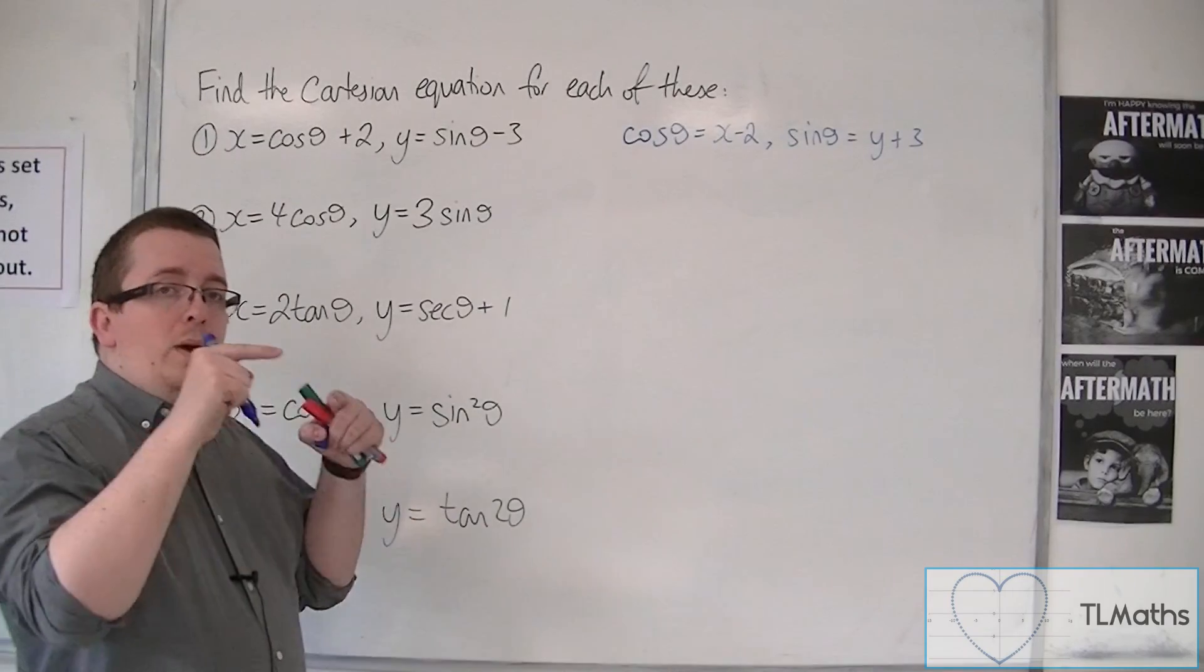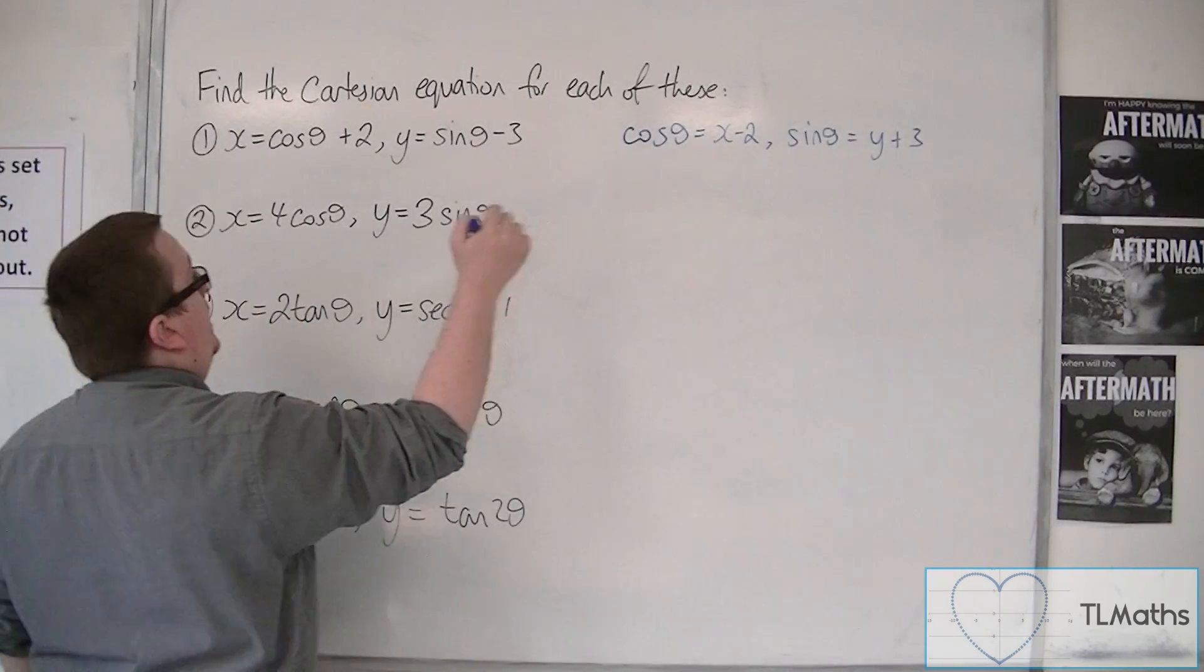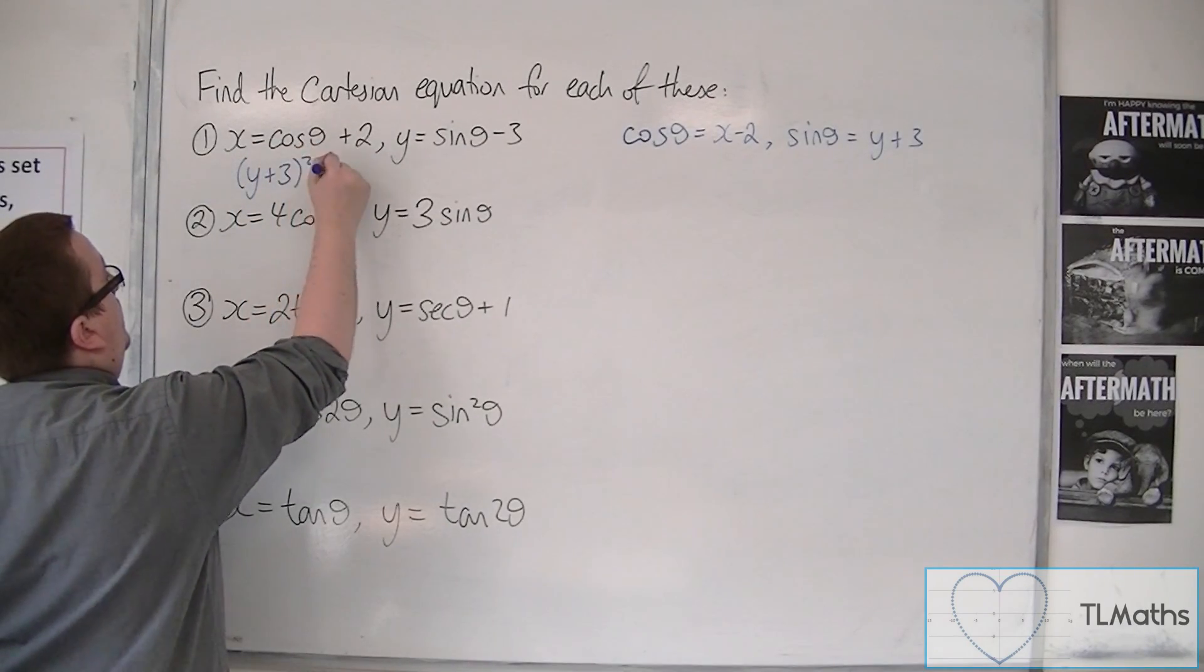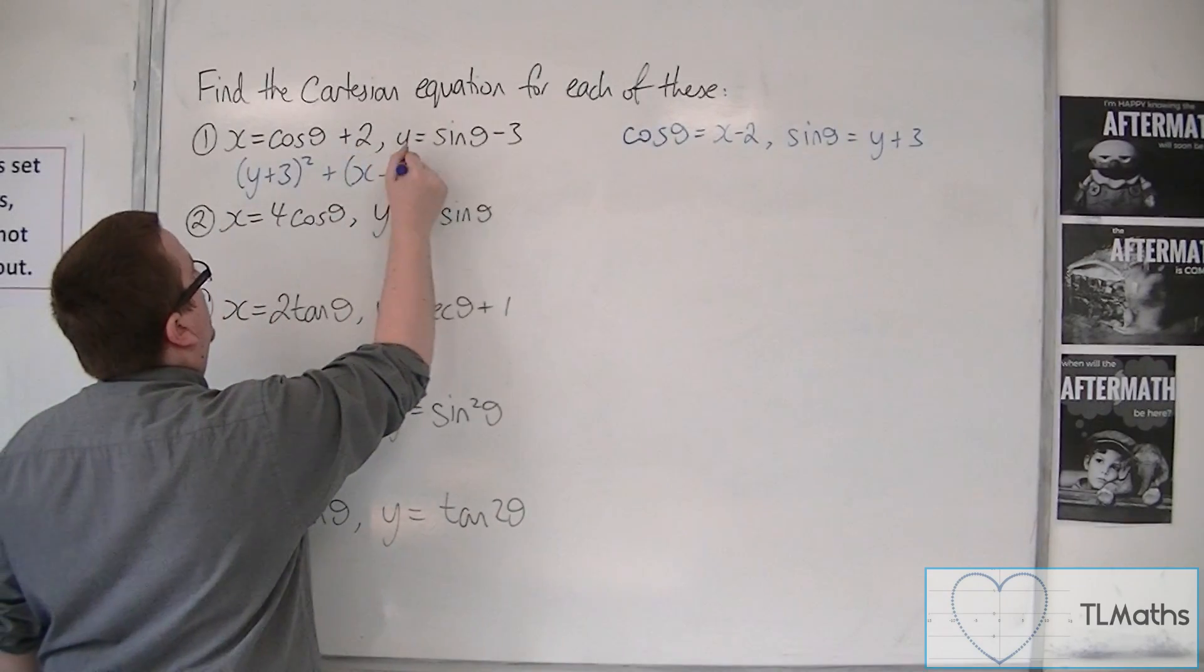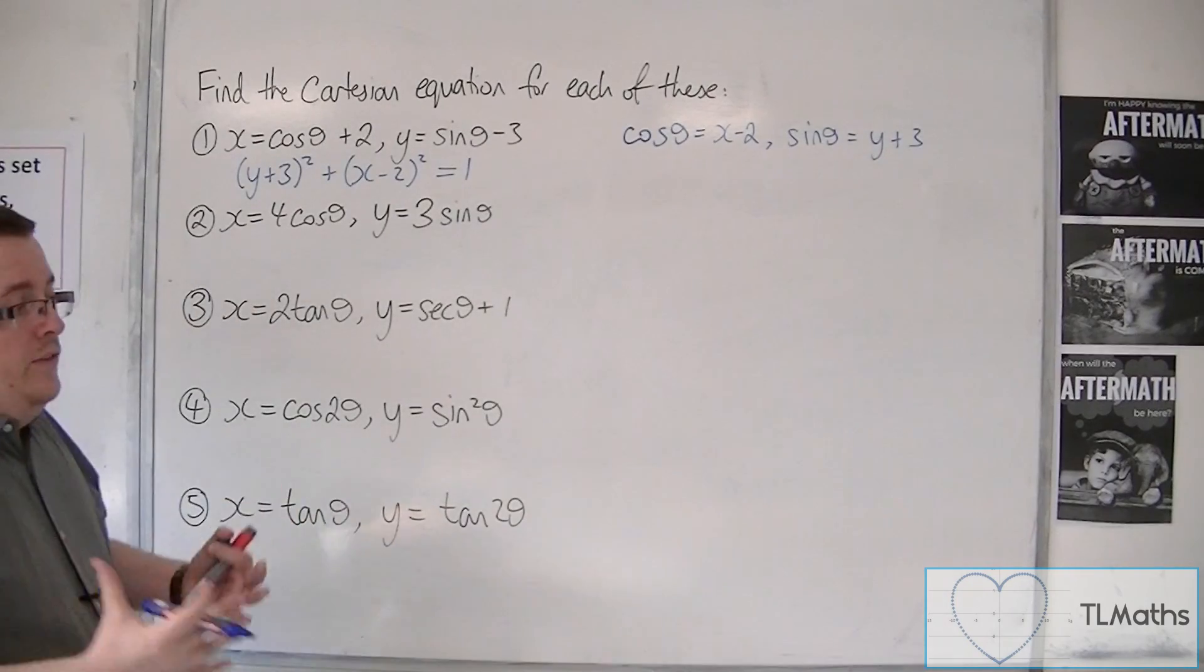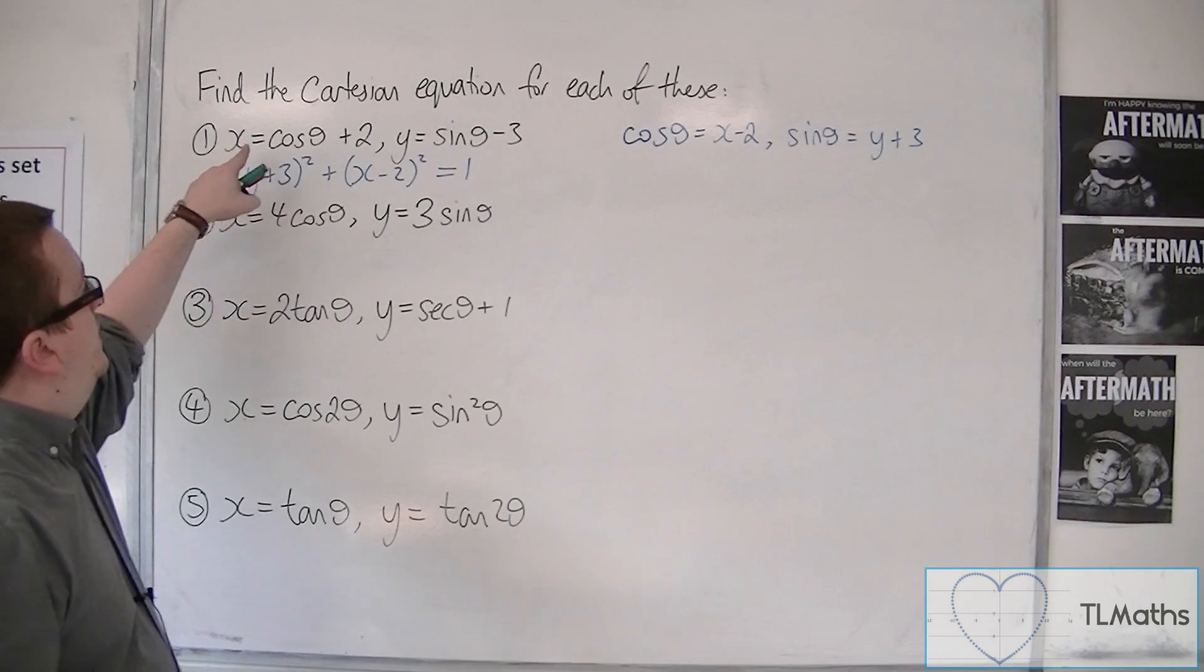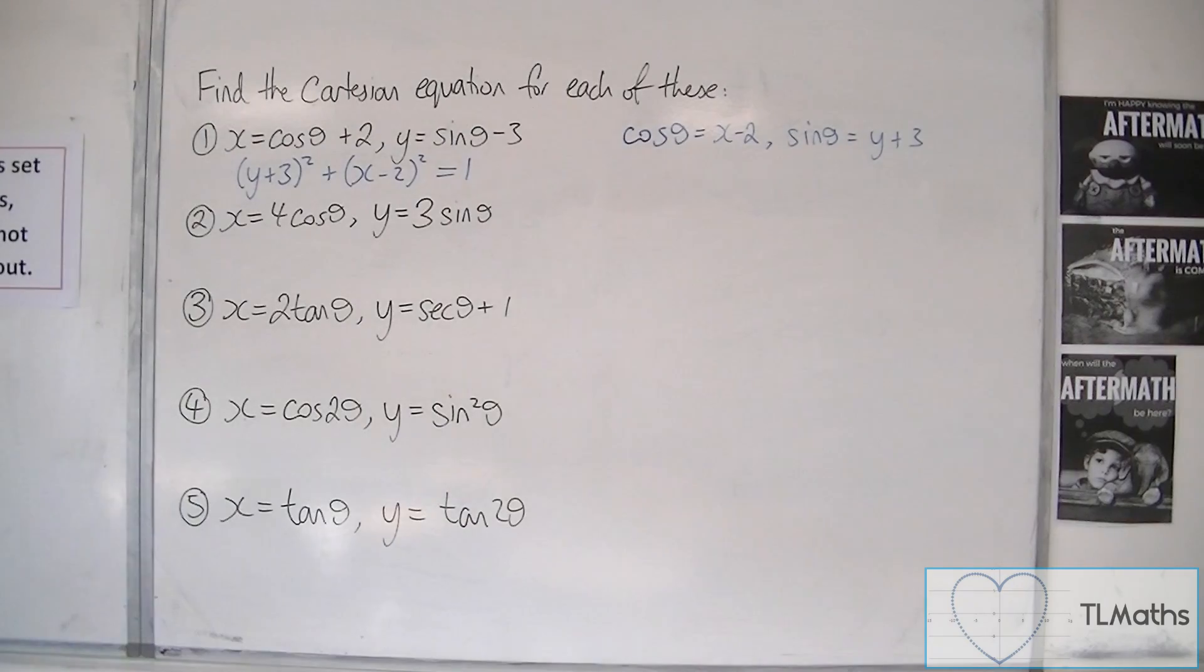And then I can use sin squared plus cos squared is 1. So sin squared is y plus 3 squared plus cos squared, which is x minus 2 squared, must be equal to 1. And that is us using a trig identity to write those two parametric equations as a single Cartesian one.